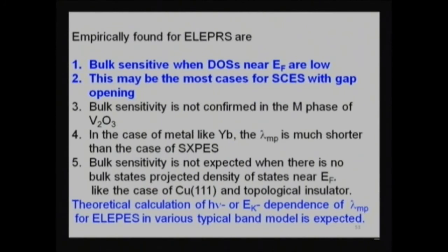Empirically, LPS is found to be bulk sensitive. The density of states near the Fermi level is low — this may be most often the case for systems with gap opening, meaning the insulator phase. But in the metallic phase of V2O3, for example, it is surface sensitive.